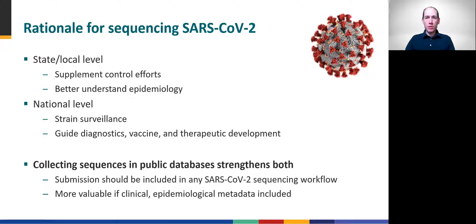Much of the toolkit's materials focus on the local scale and applications of SARS-CoV-2 sequencing for genomic epidemiology. Importantly, collecting and openly sharing genomic sequence data can both supplement local investigation and act as the link to connect local activities to support broader national public health efforts, like strain surveillance and monitoring diagnostic performance.